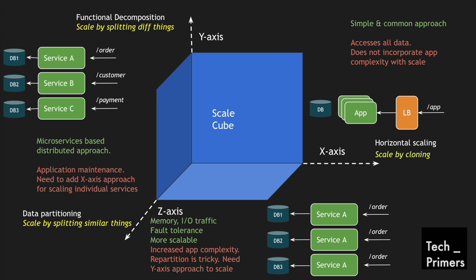Finally, without the y-axis approach you cannot easily scale using only data partitioning. Imagine having a whole food delivery app in a data partitioning approach only — you cannot survive without functional decomposition first, and then apply data partitioning on top. So a combination of all three — x-axis, y-axis, and z-axis — creates a much more scalable system compared to using any of them individually. Scalability is split into three approaches: horizontal scaling, functional decomposition, and data partitioning.